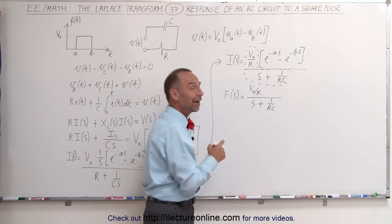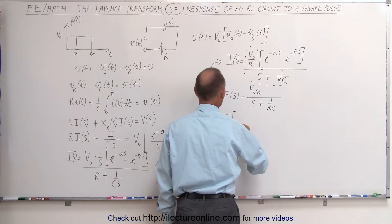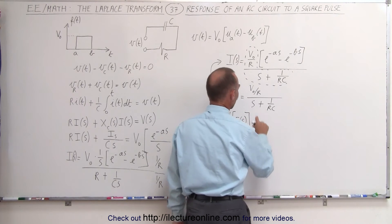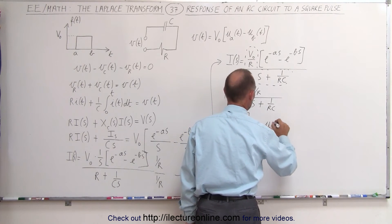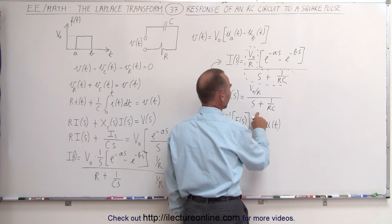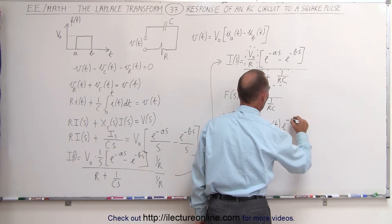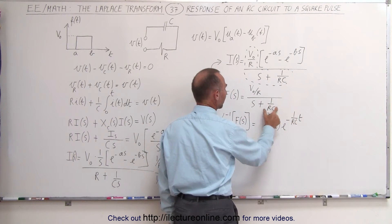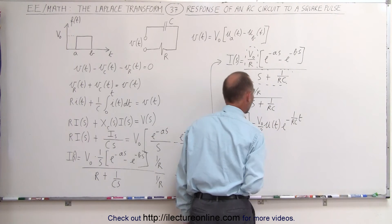The inverse Laplace transform of F of S gives us a unit step function U of T times E to the minus (1 over RC) times T, multiplied by the constant V sub nought over R.